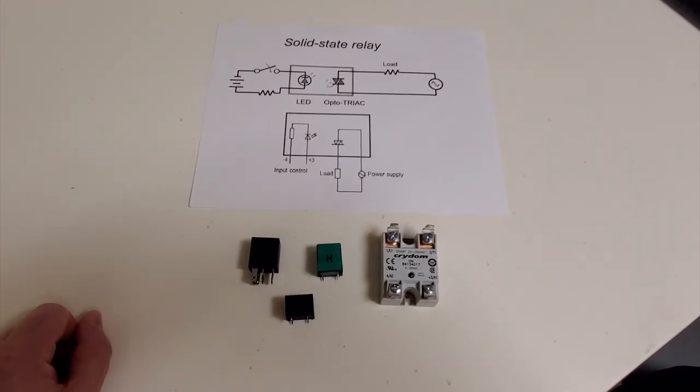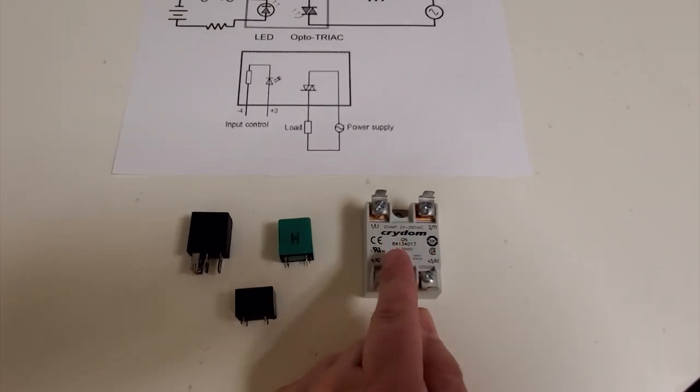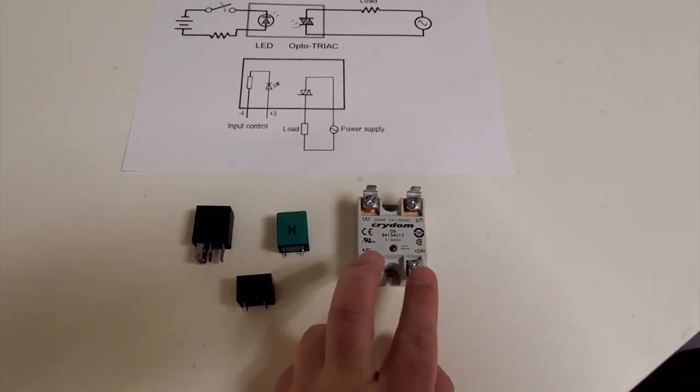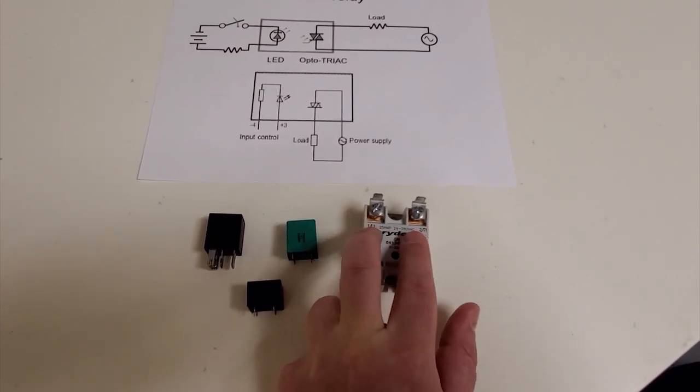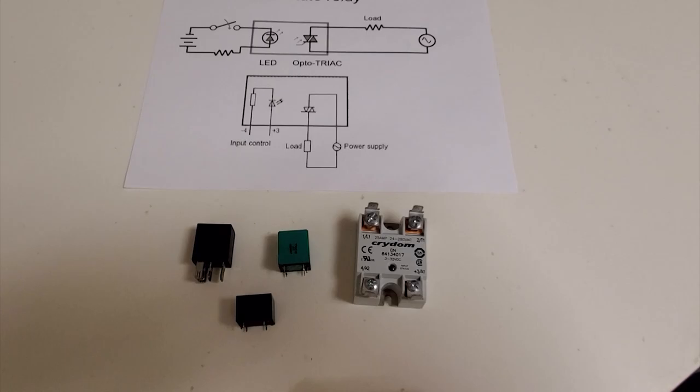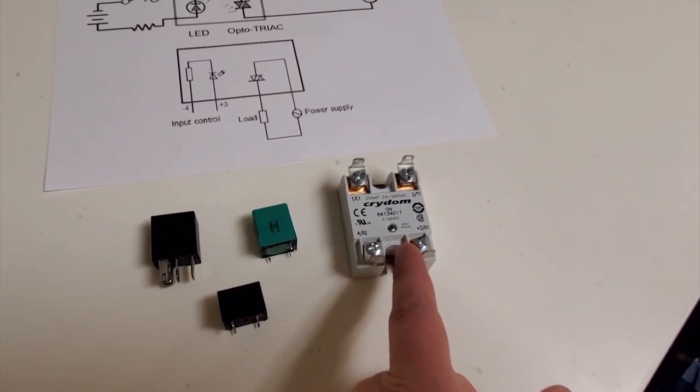So what are these solid state relays? How do we use them? If you take a look at it, it conveniently has a little status indicator light right here that shows when there's power applied to this side, it will switch the load on this side. And solid state relays have a variety of voltages that will allow them to turn on.